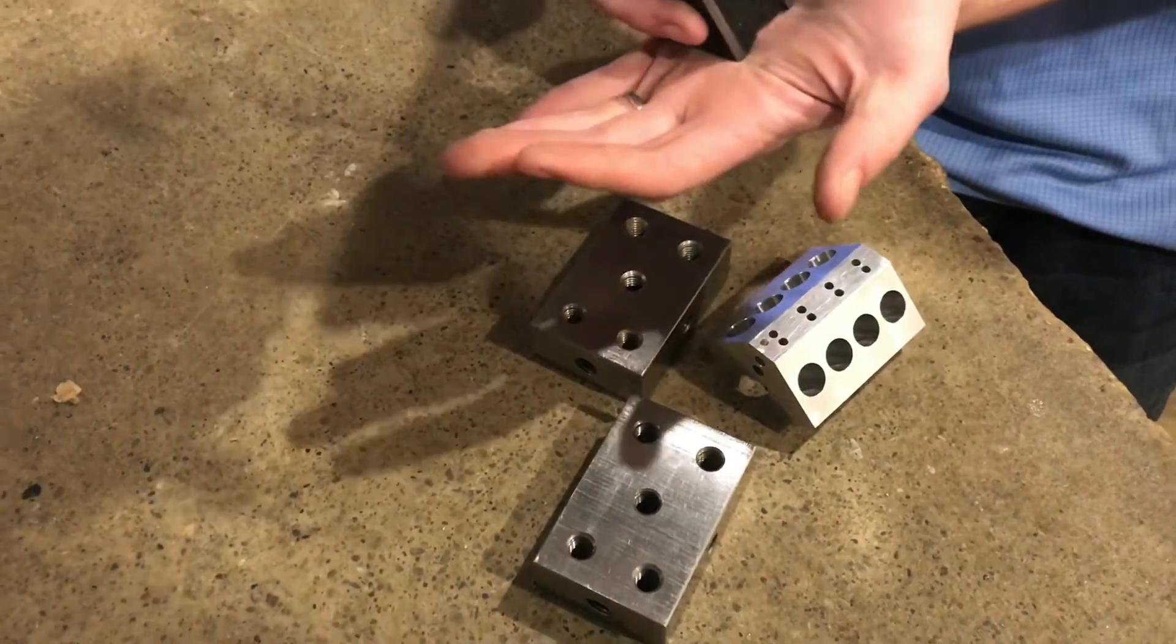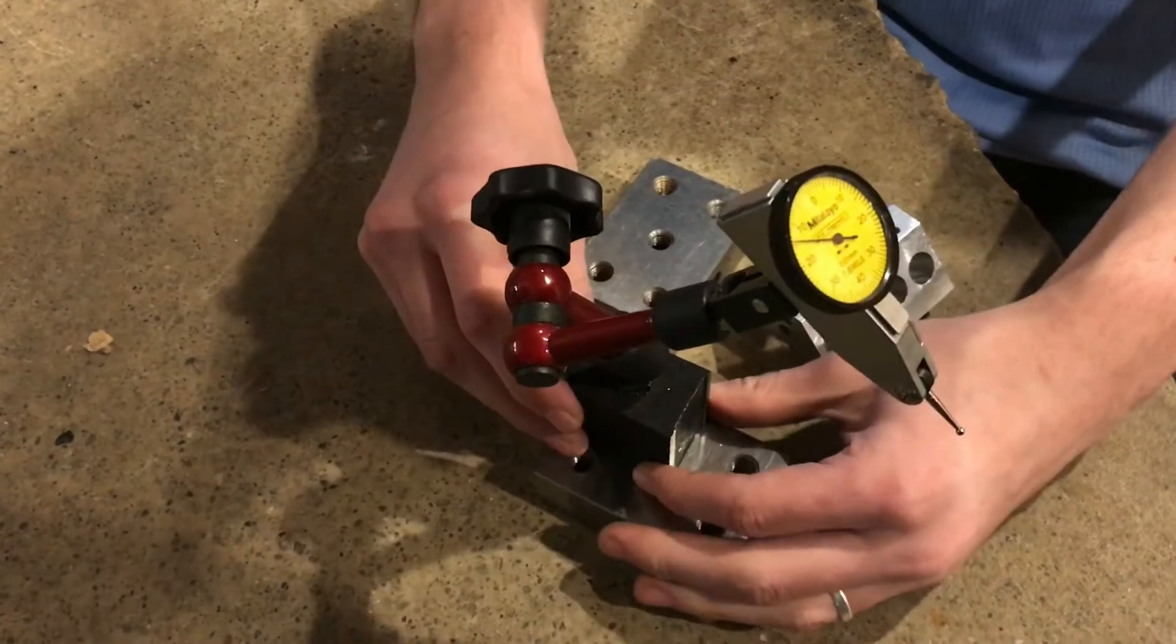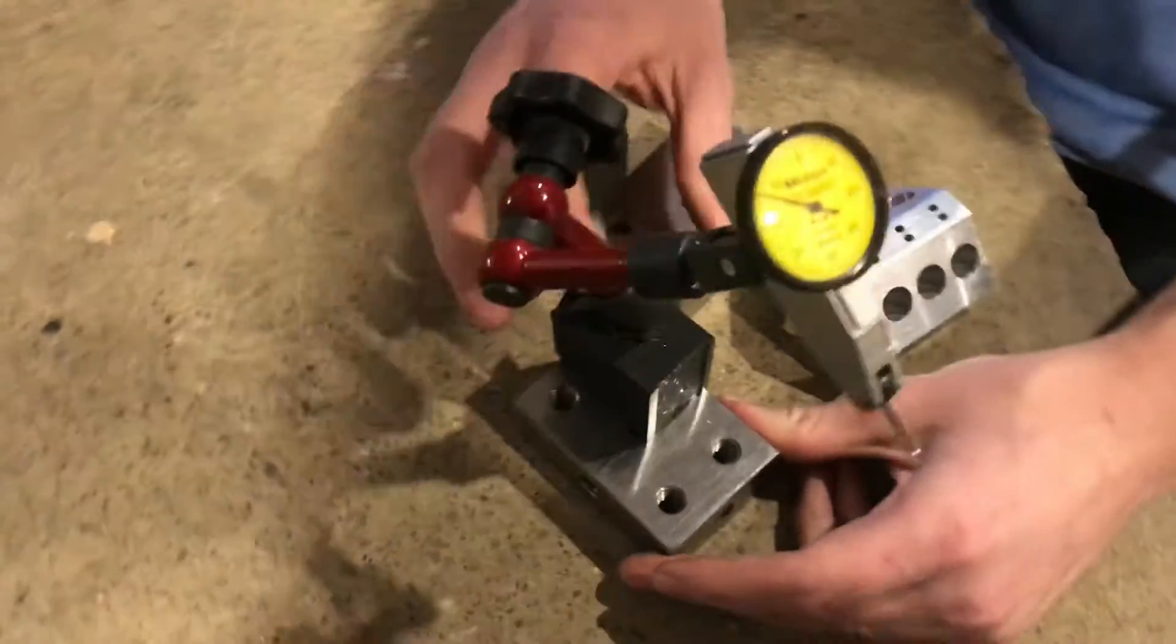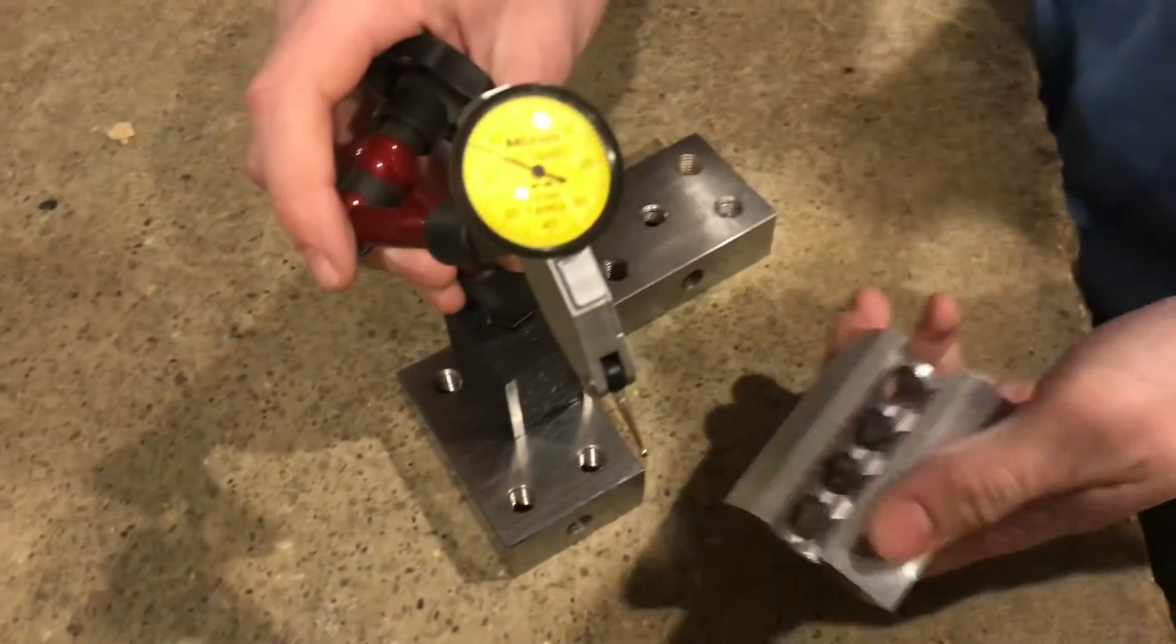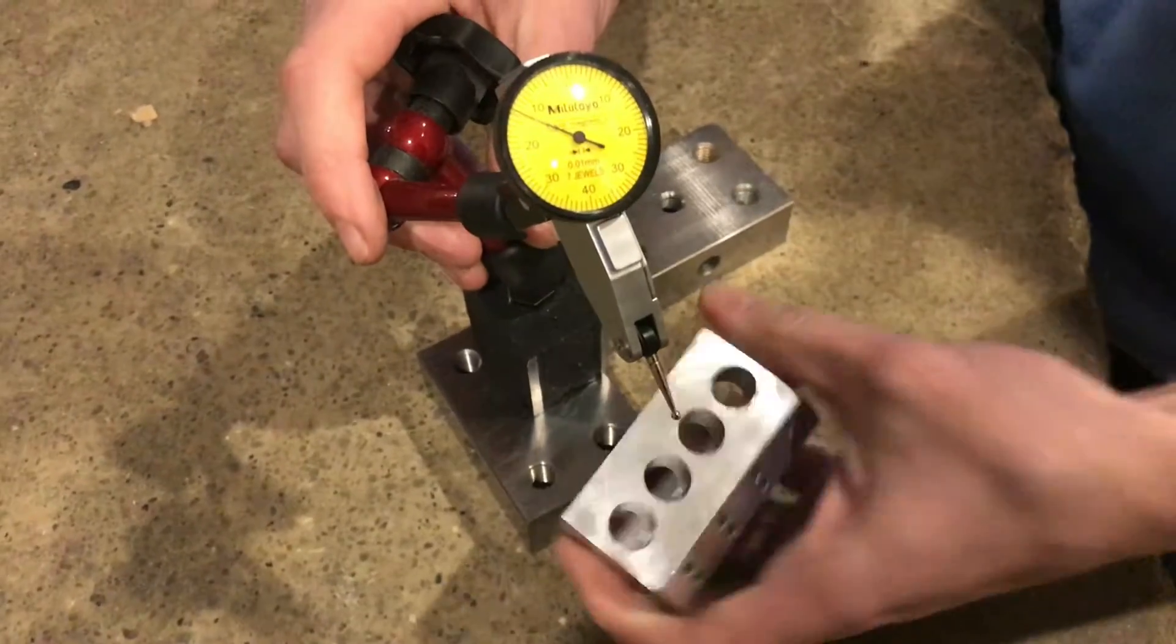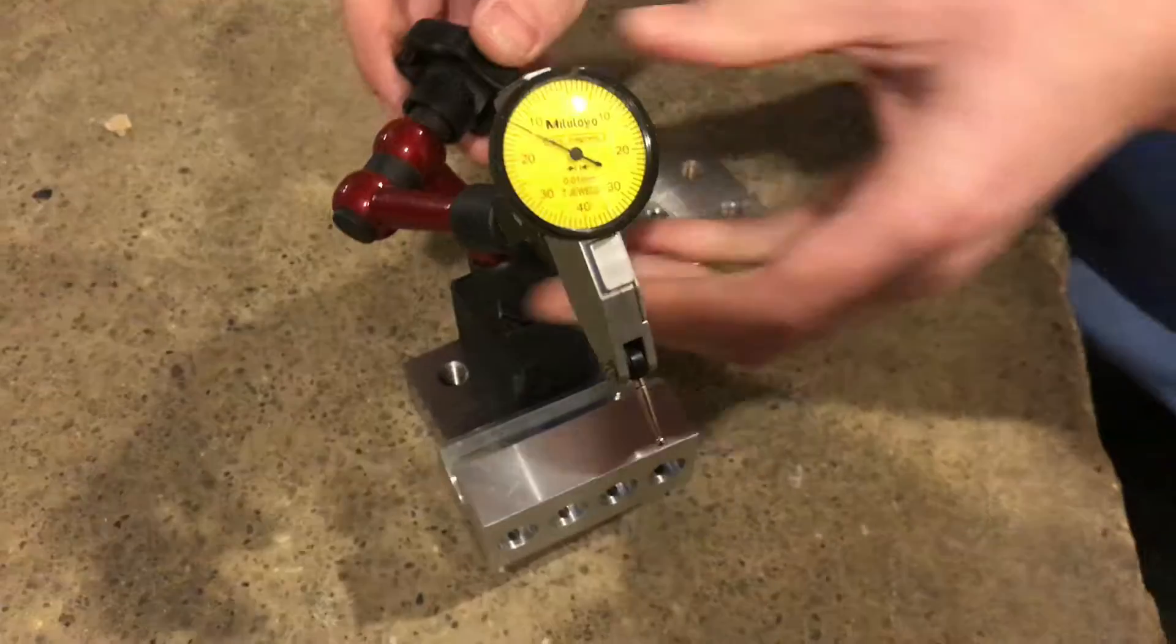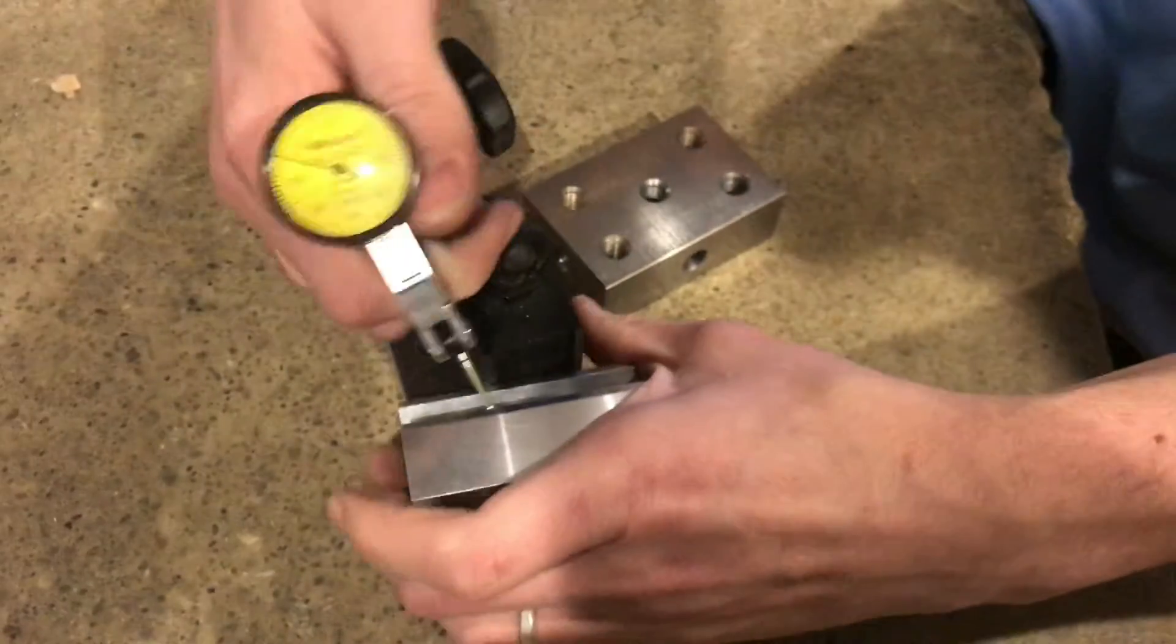First, for parallelism, I'm going to wipe off all the dirt. Because these are steel, they'll stick to the magnet on my indicator, and now I can check for parallelism by laying this flat and bringing my indicator down on it.